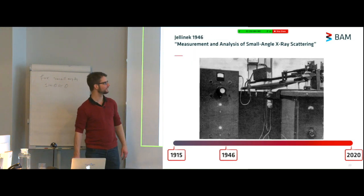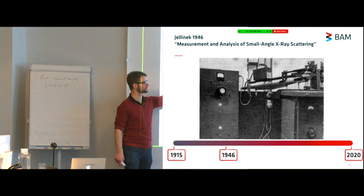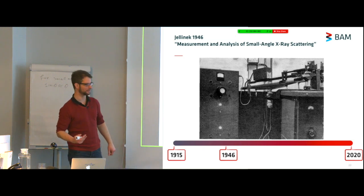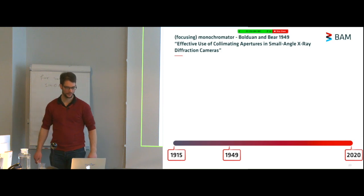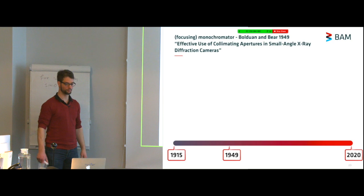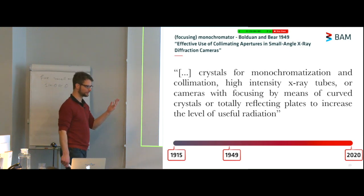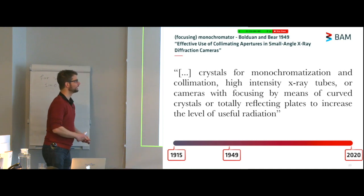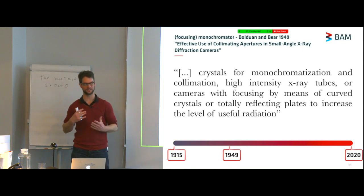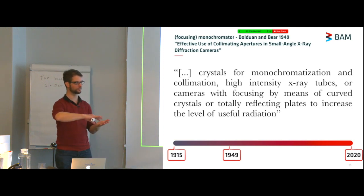This is a picture of their instrumentation. It's got an X-ray generator on the right-hand side. You can see that their small angle scattering instrument isn't actually evacuated yet in this configuration. In 1949, there's a nice review paper from Baldwin and Baer that mentions many of the developments in current use at synchrotrons and labs. They talk about using crystals for monochromatizing your X-rays, using high-intensity X-ray tubes. I think this is the time that the rotating anode generator was being conceptualized, or focusing your X-rays by curving your crystals or using total reflections from polished glass plates.